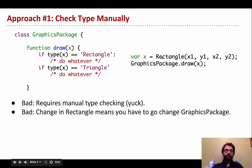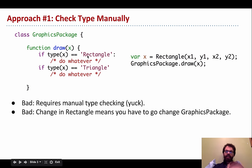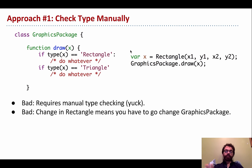In a language without static types — let's call it Josh Hug++ — you might create a rectangle, store it in a variable X, and then tell your graphics package to draw X. In the most naive approach, you'd write: if the type of X is rectangle, do the rectangle drawing thing; if triangle, do the triangle thing. This requires manual type checking, which is gross.